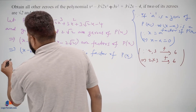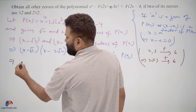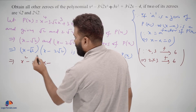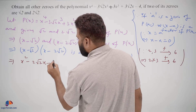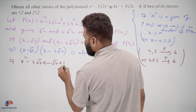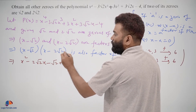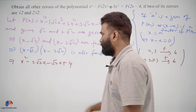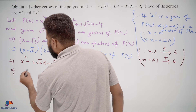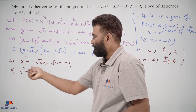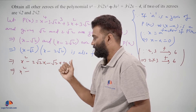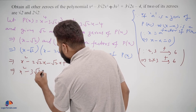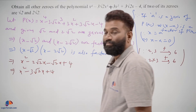Now let us simplify. Expanding (x minus square root 2)(x minus 2 square root 2): x times x gives x squared, then minus 2 square root 2 x, minus square root 2 x, plus square root 2 times 2 square root 2 which equals 4. Combining the x terms, we have minus 3 square root 2 x, so the result is x squared minus 3 square root 2 x plus 4.